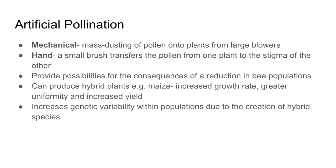Artificial pollination provides a possibility if we do see a further reduction in the bee population in our ecosystems. It allows us to produce hybrid plants, which is what we did with maize, and we see an increased growth rate, greater uniformity, and increased yield, and it increases the genetic variability within populations.